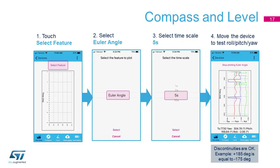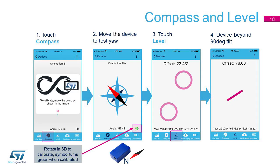This time the data is represented by Euler angles. Move the SensorTile.Box to see the graphs moving. By hitting the Compass button at the bottom of the screen, you can see a compass drawing pointing to the magnetic north. By hitting the Level button, you will see an animation with two circles representing inclinations.